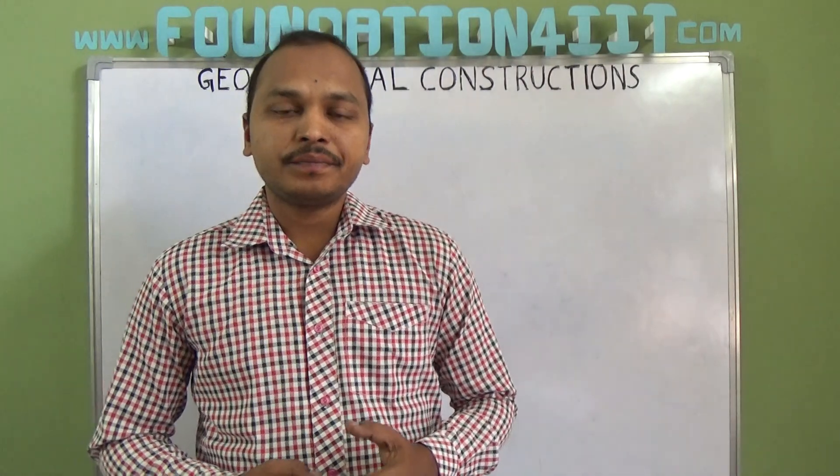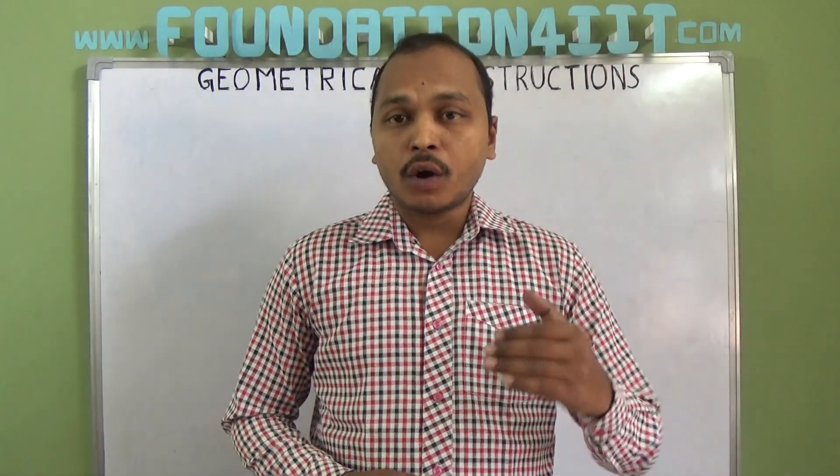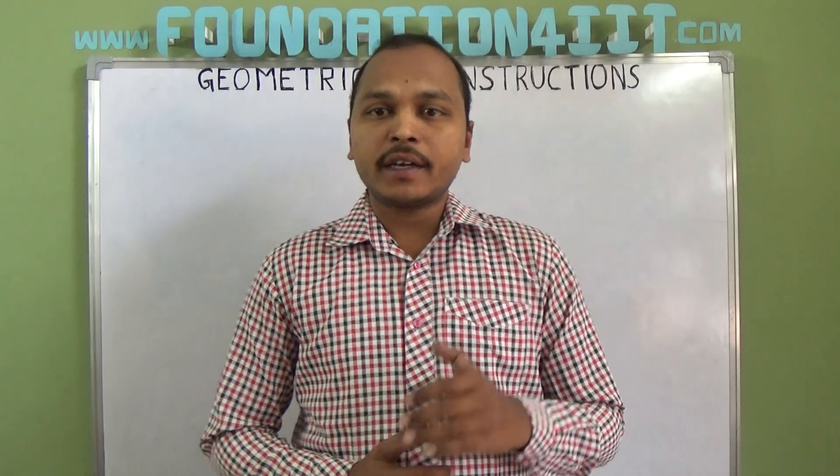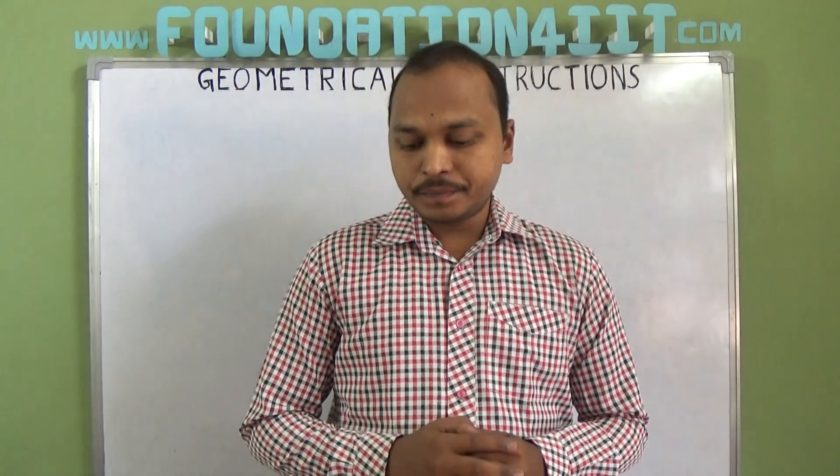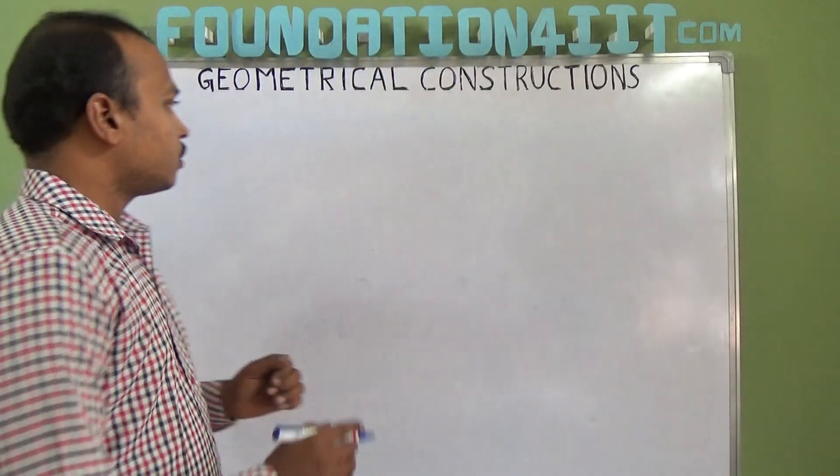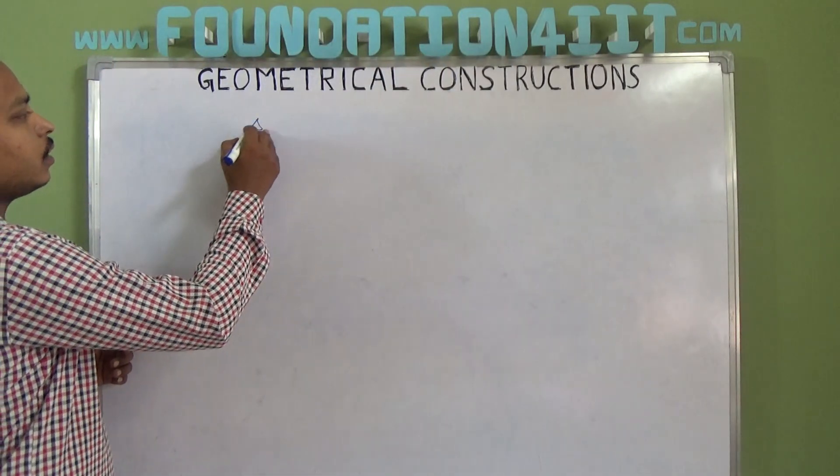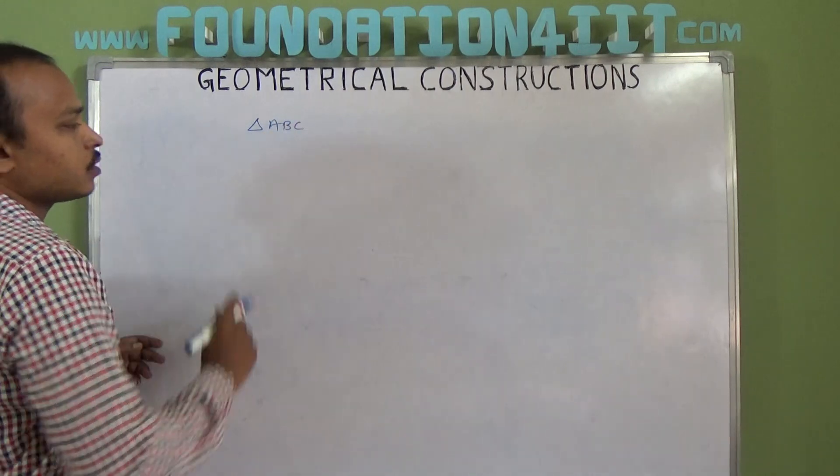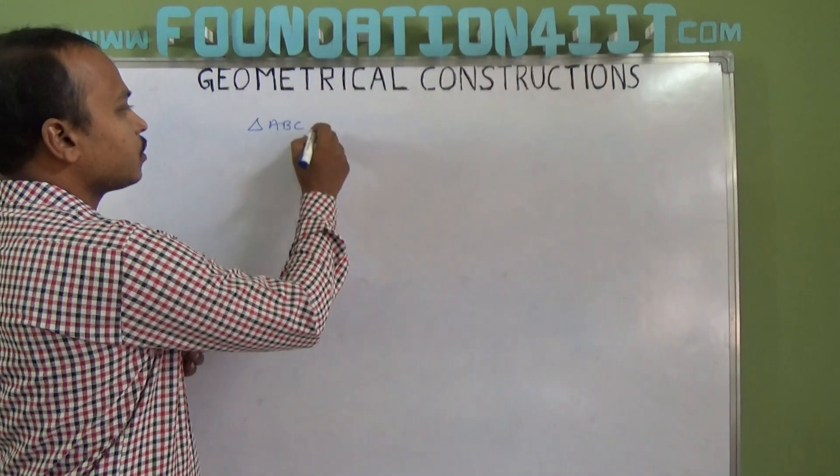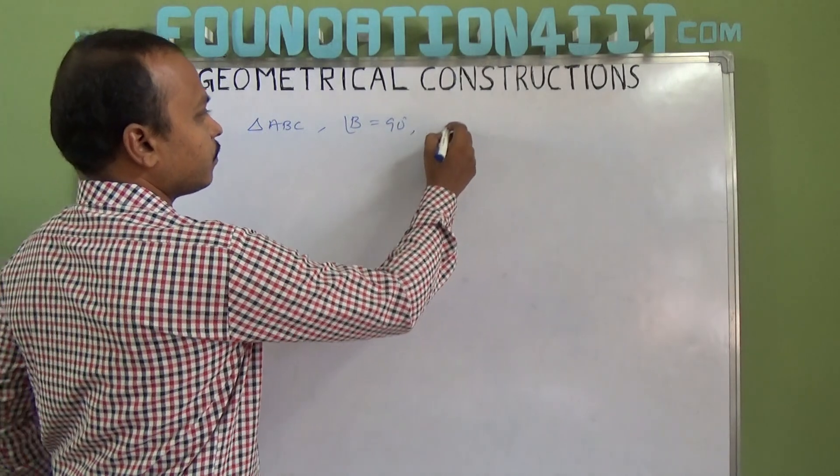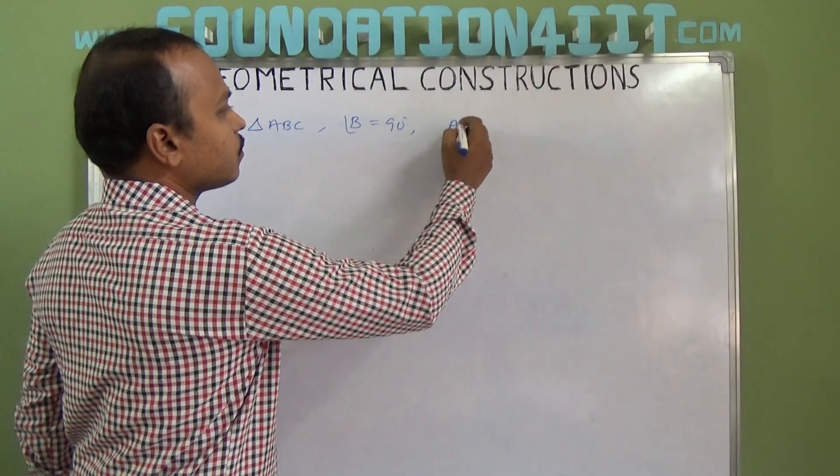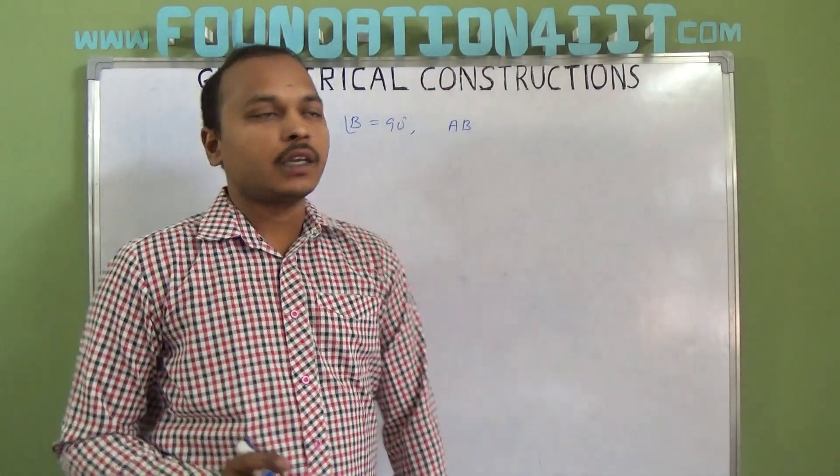Welcome to the educational channel. In this video, I'm going to explain how to construct a right-angled triangle when the sides forming the right angle are given. We need to construct triangle ABC where angle B is 90 degrees, and the sides forming the right angle are AB and BC.